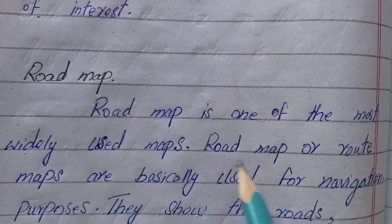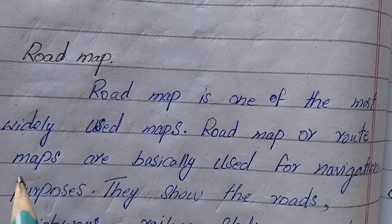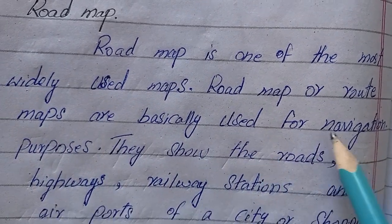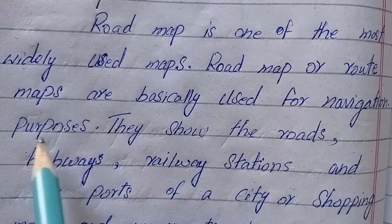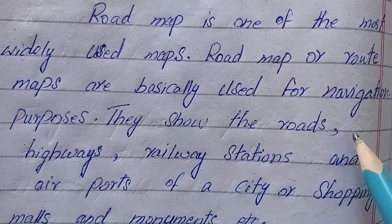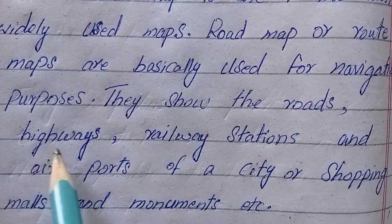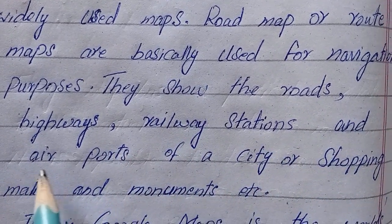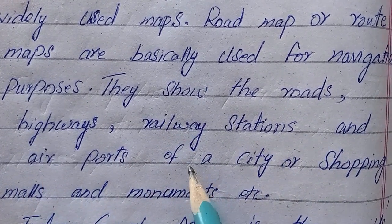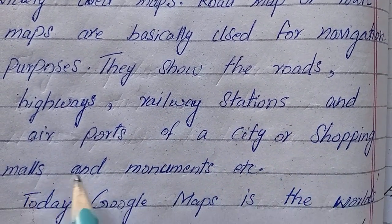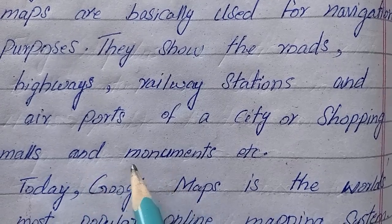Road map: a road map is one of the most widely used maps. Road maps are route maps basically used for navigation purposes. They show the roads, highways, railway stations, and airports of a city, as well as shopping malls.